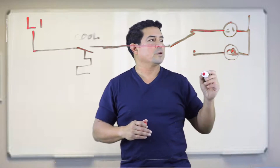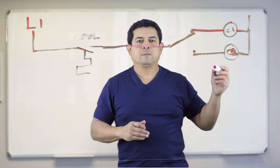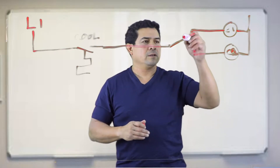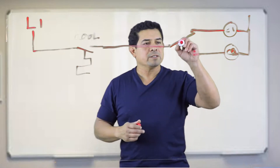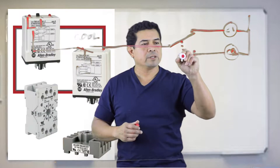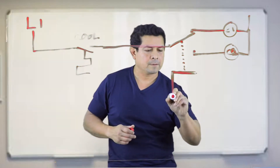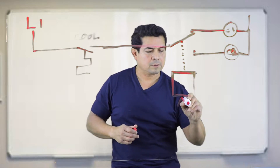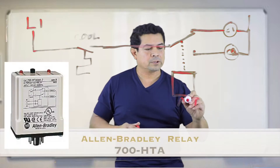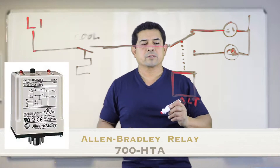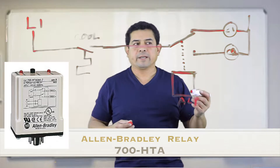So now I'm going to run compressor number one and it's going to go back to where it came from. When it starts up again, this is going to come down and run compressor number two. But for this, we're going to have to have what they call an alternating relay.